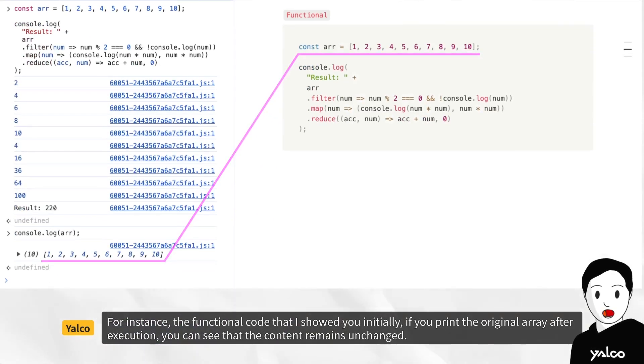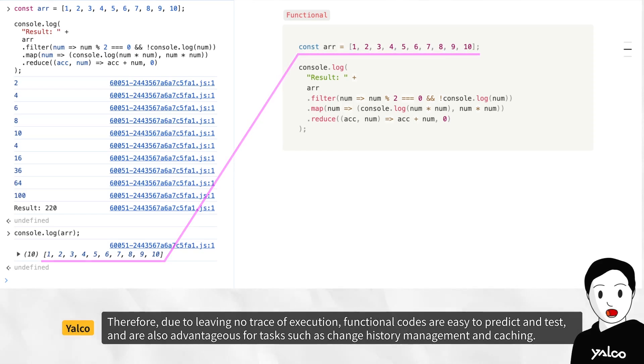For instance, the functional code that I showed you initially, if you print the original array after execution, you can see that the content remains unchanged. Therefore, due to leaving no trace of execution, functional codes are easy to predict and test, and are also advantageous for tasks such as change history management and caching.